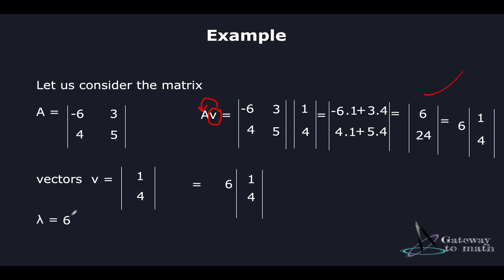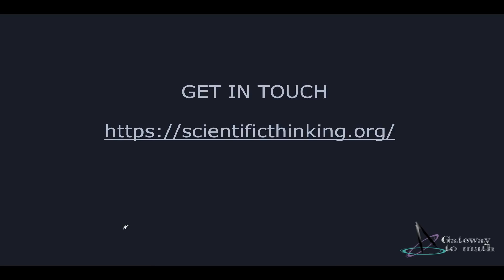Now let's take the right hand side of the equation where we take the vector and multiply it with the scalar lambda value. In this case, lambda equals 6 and the vector value v is 1 and 4. So it's pretty much the same. Since the left hand side of the equation av equals the right hand side of the equation lambda v, that means the vector v, which is 1 and 4 is actually an eigenvector and eigenvalue lambda is 6 in this case. So this is pretty much it.